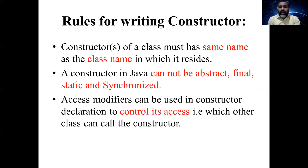A constructor in Java cannot be abstract, final, static, or synchronized — these keywords apply to ordinary methods but not to constructors. Access modifiers can be used in constructor declarations to control access — that is, which other classes can call the constructor. Just like with normal methods we provide public, private, or protected, we can also provide access modifiers in constructors to control whether inherited subclasses can call the constructor.